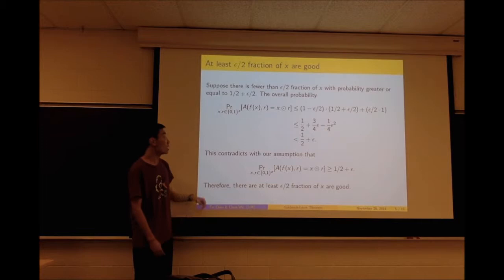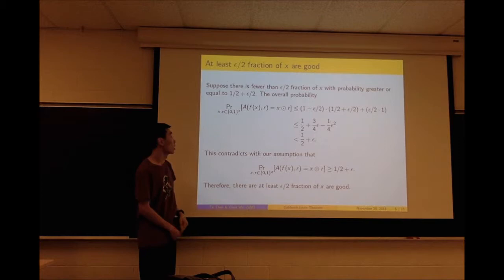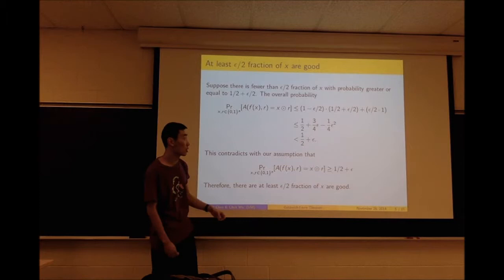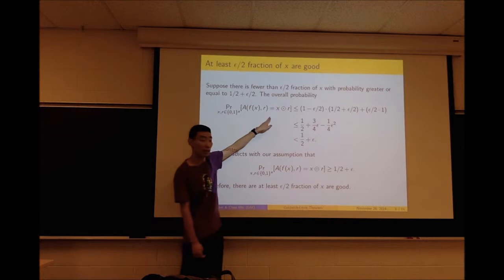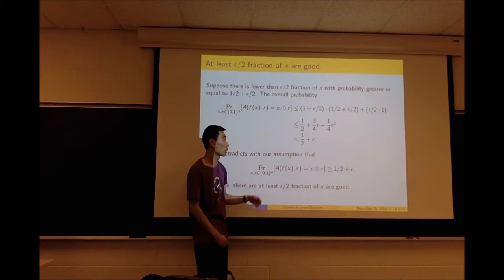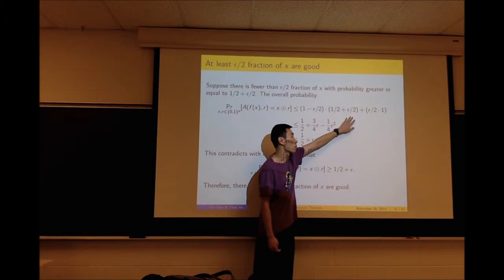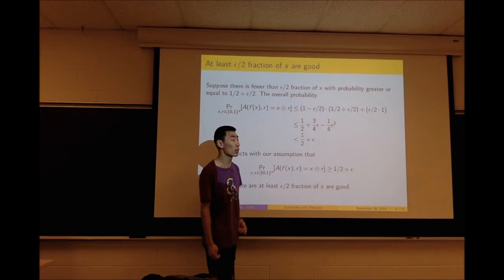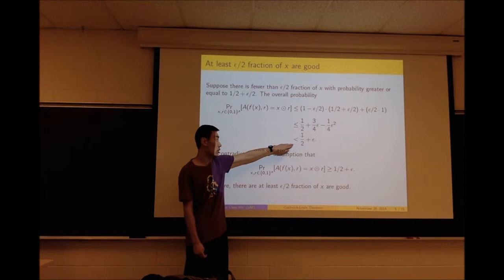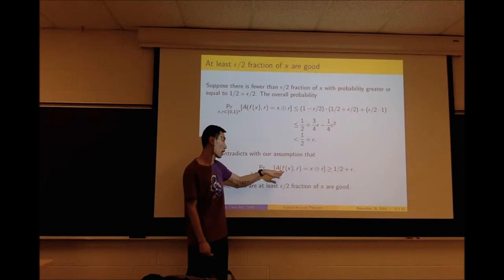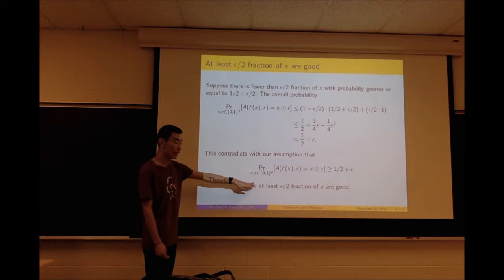Let's show that at least an ε/2 fraction of x are good. Suppose there are fewer than ε/2 fraction of x for which the probability is greater than 1/2 plus ε/2. Then the overall probability over all x that A(f(x), r) equals x dot r would be at most (1 − ε/2)·(1/2 + ε/2) plus (ε/2)·1, which equals 1/2 + 3ε/4 − ε²/4, which is less than 1/2 + ε. This contradicts our assumption, so at least ε/2 fraction of x must be good.